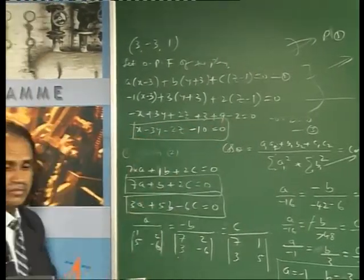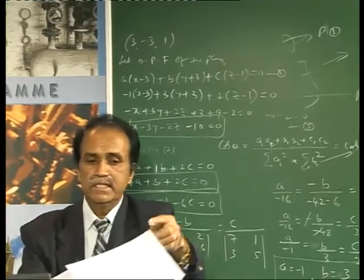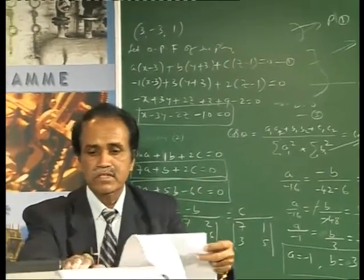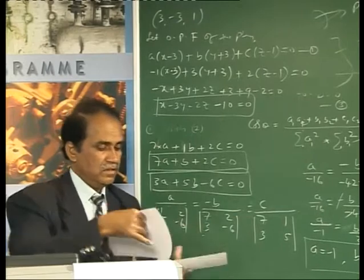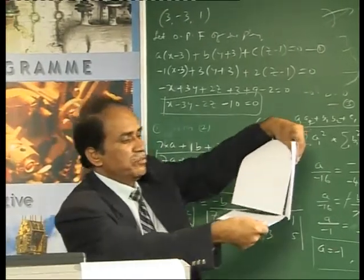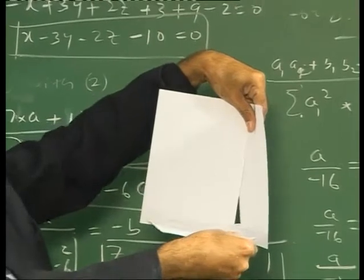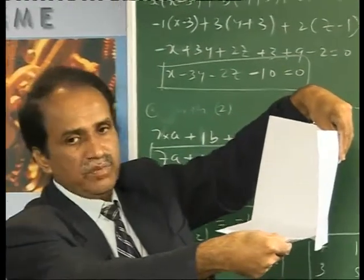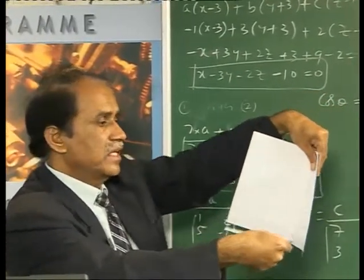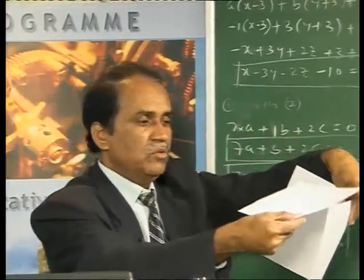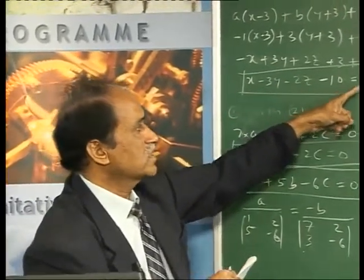Substituting a=−1, b=−3, c=2 back into the one-point form: −1(x−3) + (−3)(y+3) + 2(z−1) = 0, which simplifies to −x + 3 − 3y − 9 + 2z − 2 = 0, giving −x − 3y + 2z − 8 = 0, or equivalently x + 3y − 2z − 8 = 0 (correction per board: x − 3y − 2z − 10 = 0). This is the equation of the plane perpendicular to both given planes.